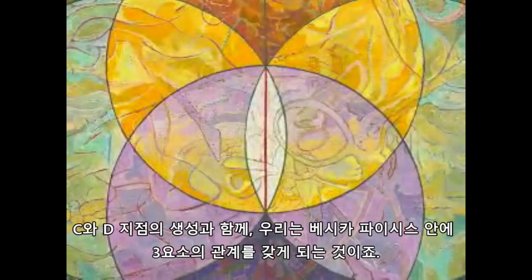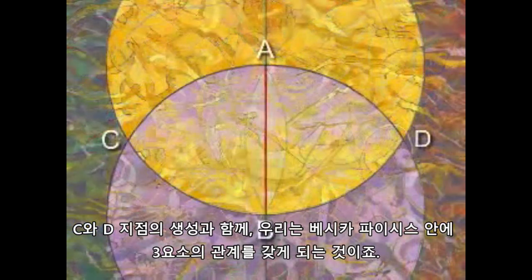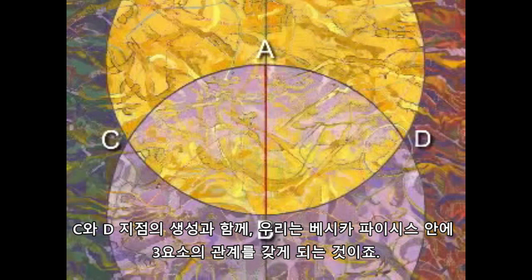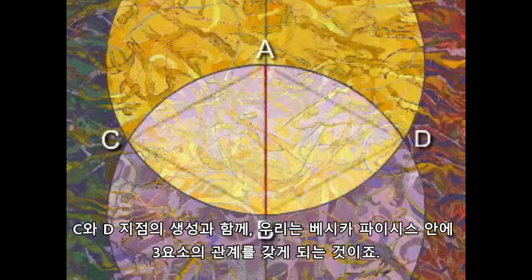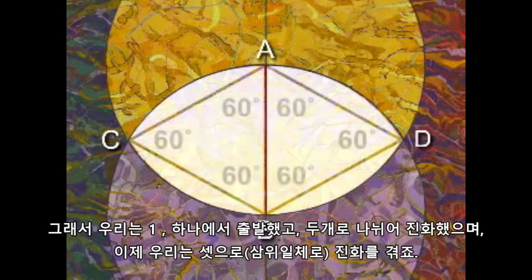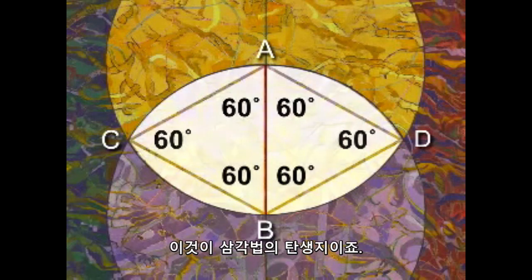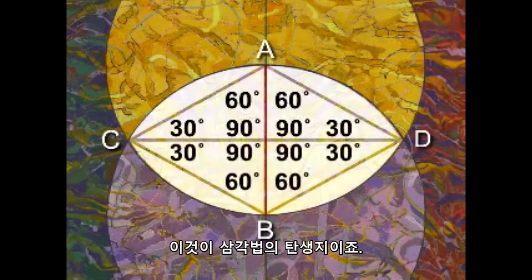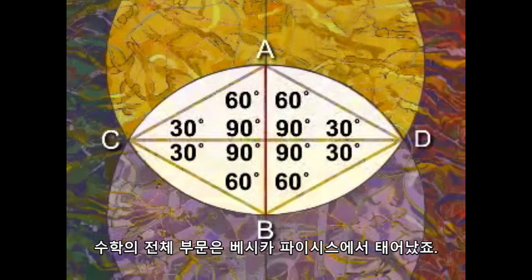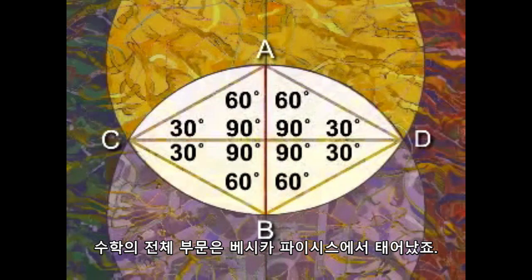With the creation of those points C and D, we have within the Vesica Pisces a triangular situation. So we started with unity, we evolved into duality, and now we have an evolution to Trinity. This is the birthplace of trigonometry — an entire division of mathematics born in the Vesica Pisces.